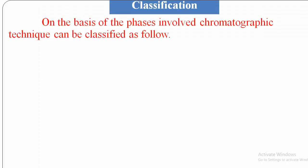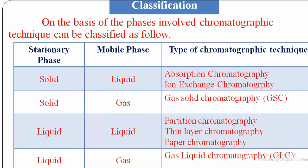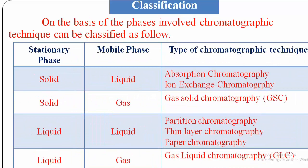We will see the classifications of chromatography on the basis of phases involved. When the stationary phase is solid and the mobile phase is liquid, the type of chromatography is adsorption chromatography, also called ion exchange chromatography. When the stationary phase is solid and mobile phase is gas, it is called gas-solid chromatography. When the stationary phase is liquid and mobile phase is also liquid, it is called partition chromatography, thin layer chromatography, or paper chromatography. When the stationary phase is liquid and mobile phase is gas, it is called gas-liquid chromatography (GLC).